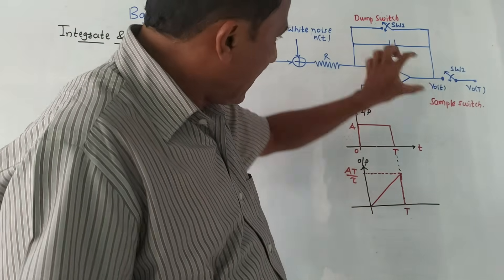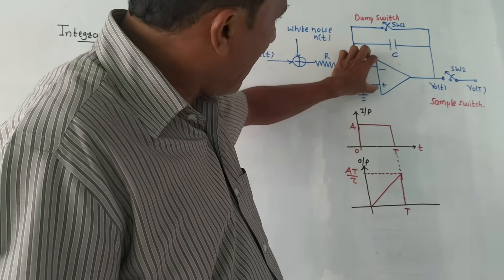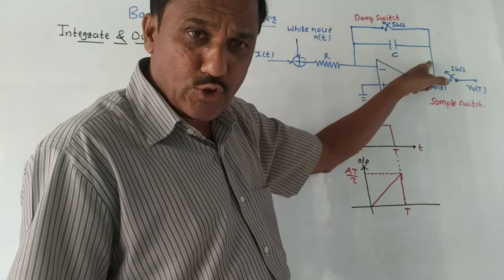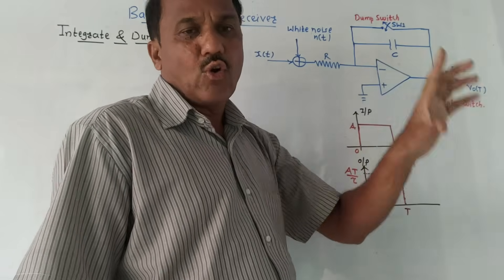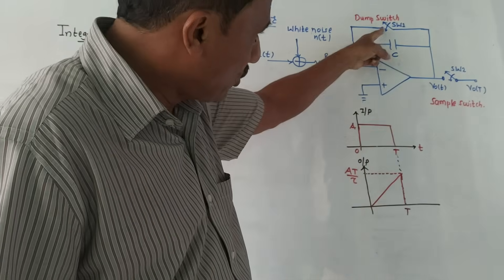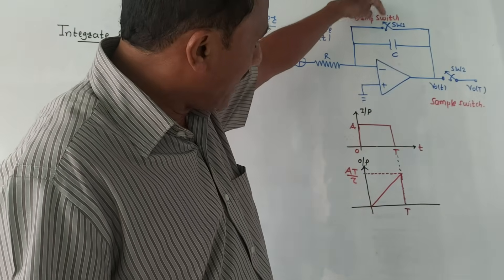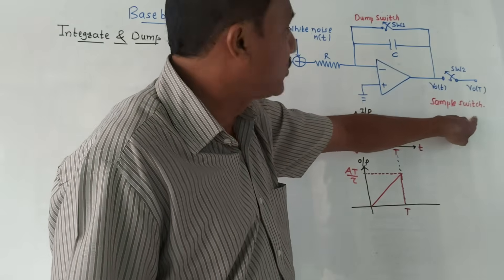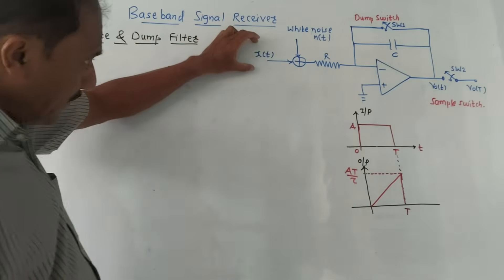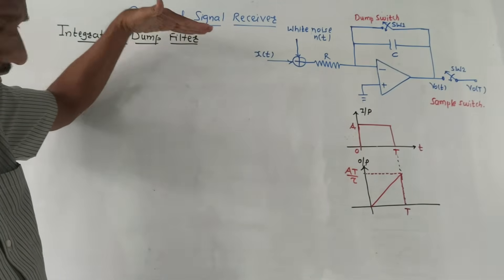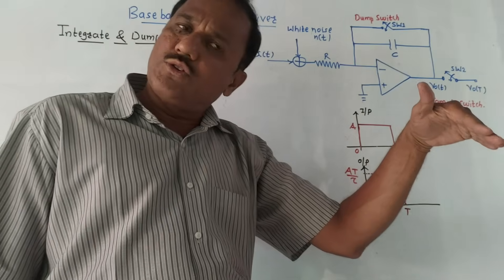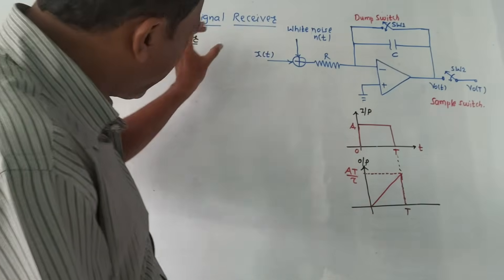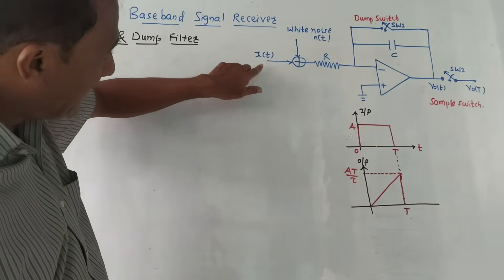This is the integrate and dump filter circuit. It has an operational amplifier, a resistor, and a feedback capacitor — such a circuit is called an integrator. There are two switches: switch number one is called the dump switch, and switch number two is called the sample switch. At the input side, this is the data traveling through some transmitting medium or channel and being received at the receiver.